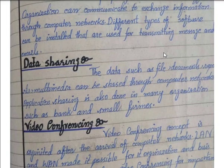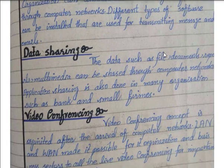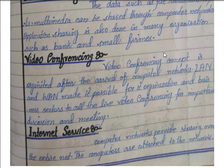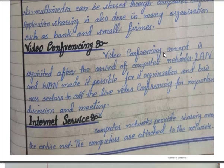The third use we have is data sharing. Data such as file documents, multimedia, or any type of files can be shared with any other person through computer networks. Many organizations, banks, multinational companies, and local companies share information and data through computer networks. Another use of computer networks is video conferencing.